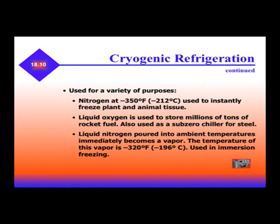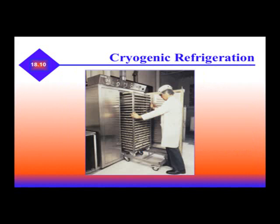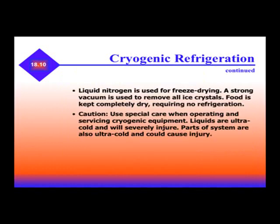Cryogenics are used for a variety of purposes. Nitrogen instantly freezes plant and animal tissue. Liquid oxygen is used to store millions of tons of rocket fuel. Liquid nitrogen poured into ambient temperatures immediately becomes vapor at negative 320 degrees, and it's used in emergency freezing. This is an example of a cryogenic refrigeration unit — the unit will immediately freeze whatever is on the trays. Liquid nitrogen is also used for freeze drying.